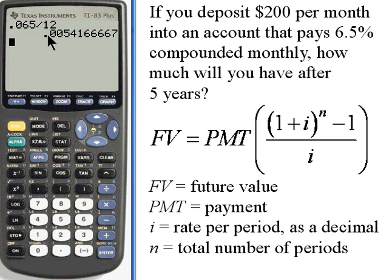Now we want that answer, this 0.0054, the number that keeps going, and we want to add 1 to that. So I've got that answer plus 1.